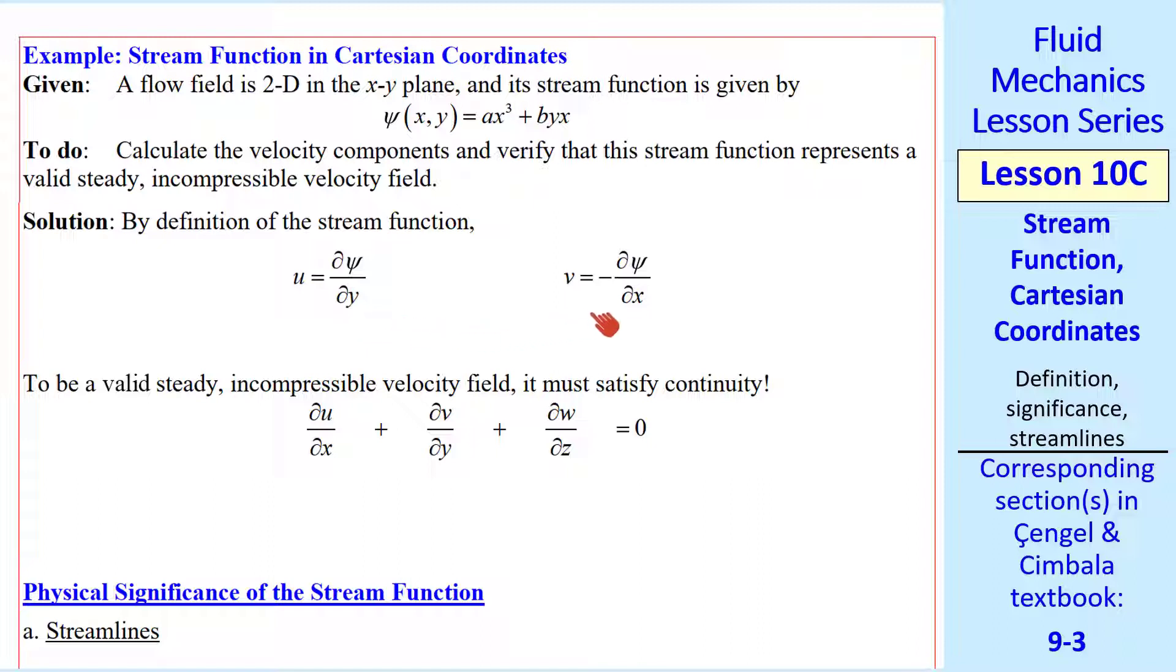Well, we start with the definition of the stream function and take partial derivatives. u equal del psi del y. The only y here is in this second term, and del psi del y is bx, and v is negative del psi del x. So I get 3ax squared and by. So my velocity components are u equal bx, and v equal minus 3ax squared minus by.